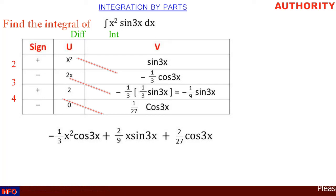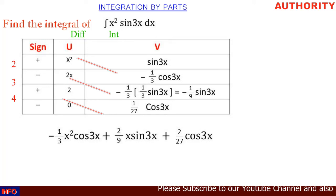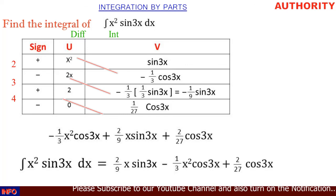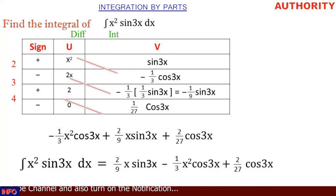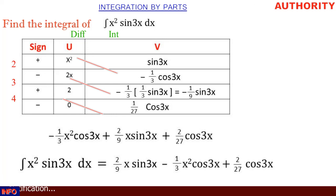Bringing it all together, the integral of x squared sine 3x dx equals 2 over 9 x sine 3x minus 1 over 3 x squared cos 3x plus 2 over 27 cos 3x. That's how you solve integration by parts within 30 seconds. Let's take more examples so you can master it easily. Thanks for watching — please like and share our videos!